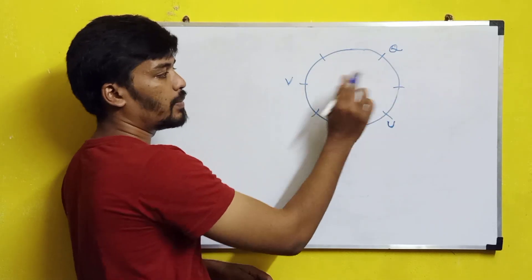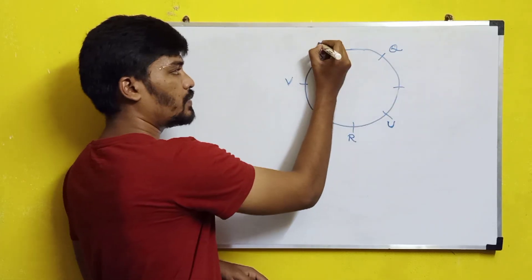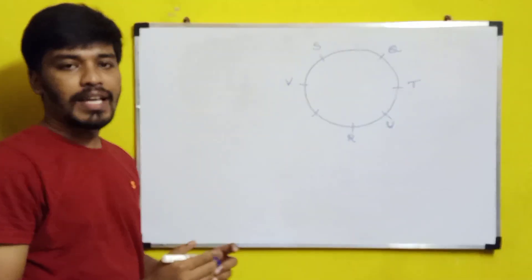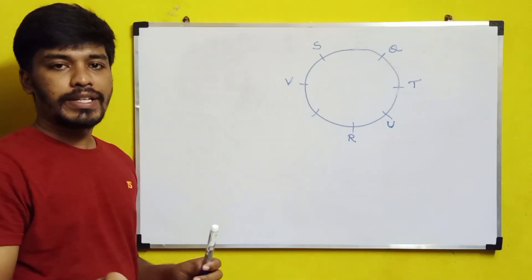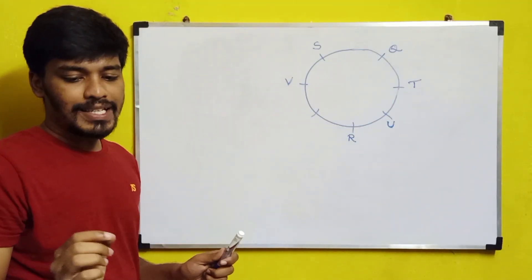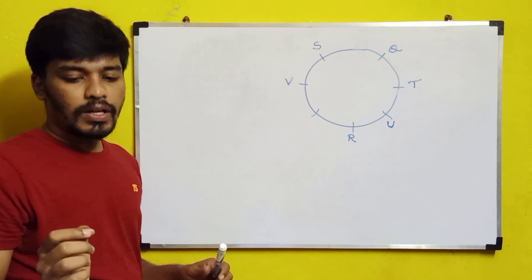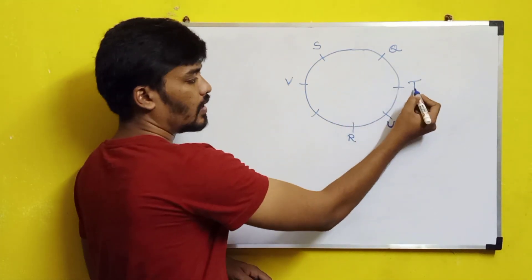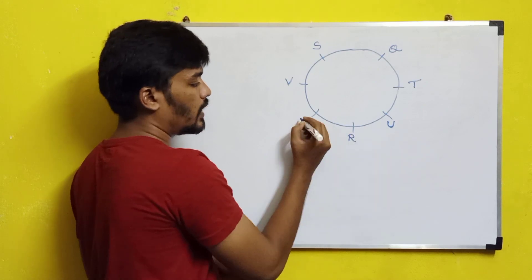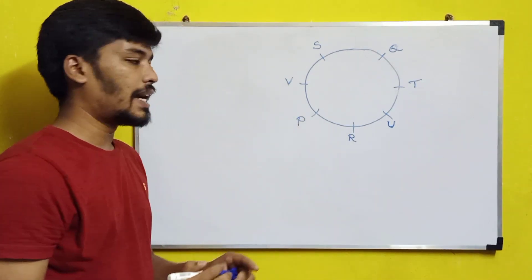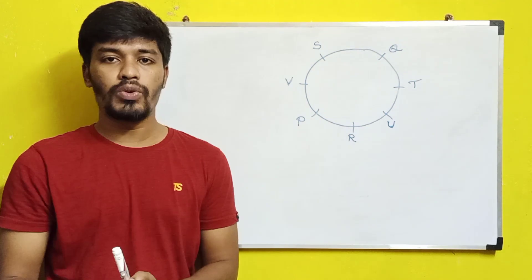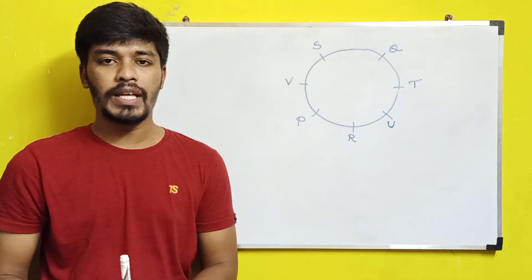S and T can vary in position. We first assume S is at one position and T at the adjacent one, then check whether the third condition — P is third to the left of T — is satisfied. Counting three positions to the left of T gives us P's seat. The third condition is satisfied with this combination. This completes the seating arrangement according to all given clues.